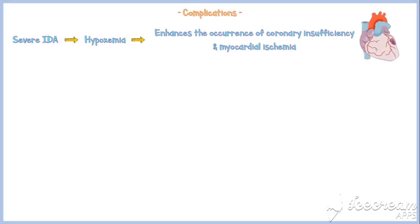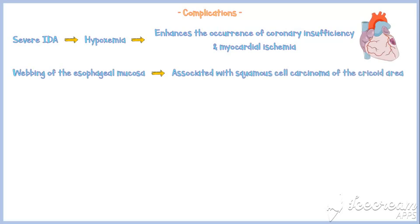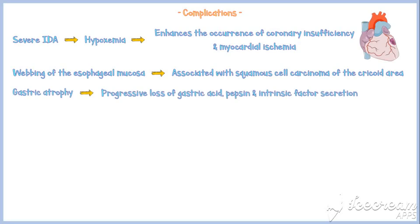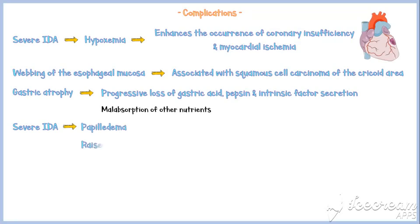In some patients, webbing of the esophageal mucosa is associated with squamous cell carcinoma of the cricoid area. Gastric atrophy may lead to progressive loss of gastric acid, pepsin, and intrinsic factor secretion, which may result in malabsorption of other nutrients. Rarely, severe iron deficiency anemia is associated with papilledema and raised intracranial pressure.